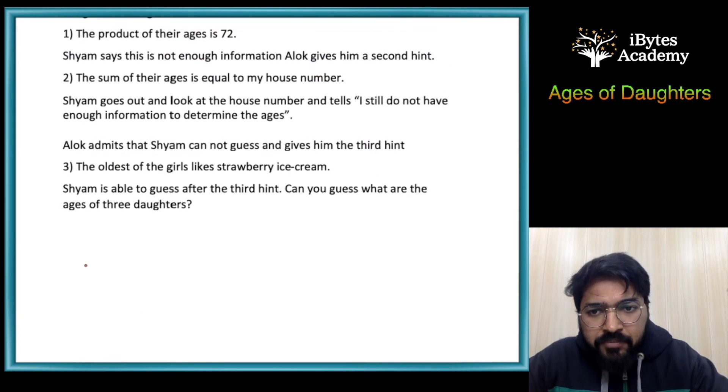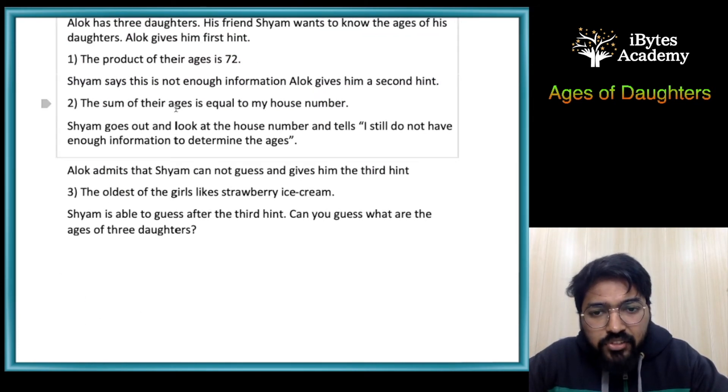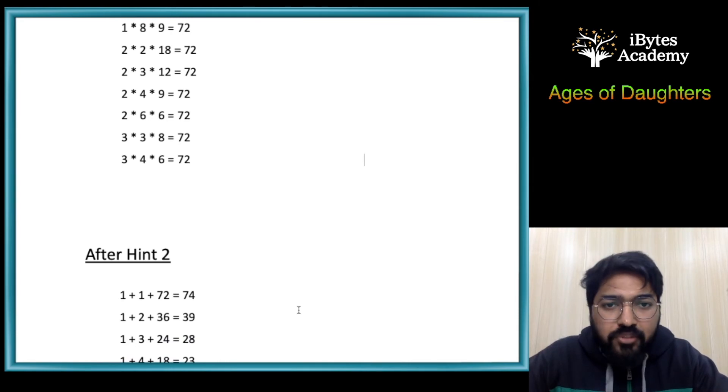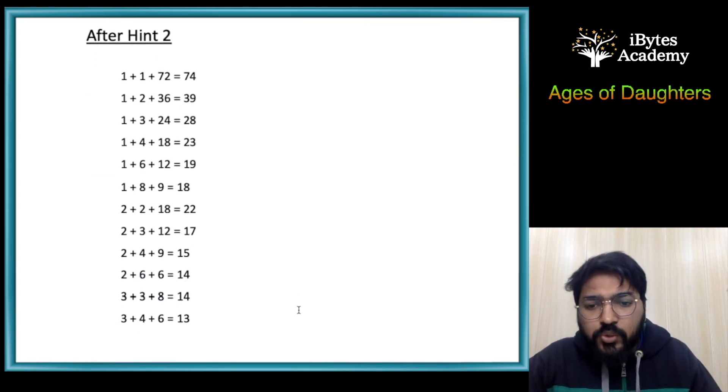Then Alok gives him the second hint: the sum of their ages is equal to my house number. So for all these 12 possibilities, he tried to find out the total of them.